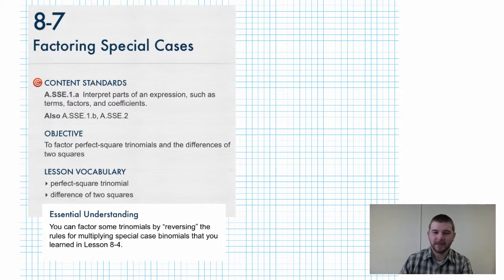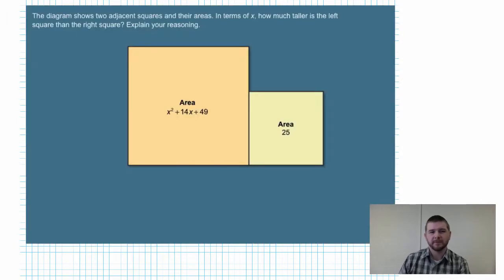Consider this problem: the diagram shows two adjacent squares and their areas in terms of x. How much taller is the left square than the right square? Explain your reasoning. One of the first and most simple things we probably notice right away is that the side length of the smaller square is five units.